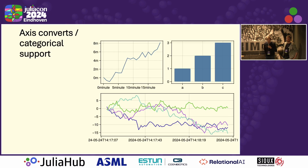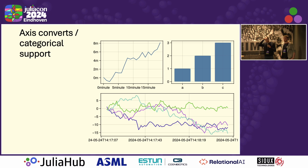I spent a lot of time making axis converters for categorical support, because they need to save global state in the axis to add new categories or to normalize with dates. Because this really went into the internals, it was quite a refactor.